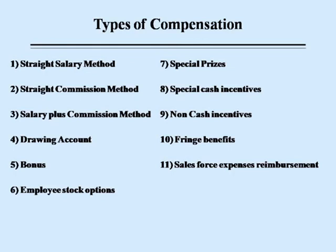Fringe benefits are benefits given to sales personnel in the form of medical reimbursement, pension schemes, group insurance, and other benefits. The last type of compensation is sales force expenses, which includes reimbursement of expenses incurred by sales personnel as part of their selling activity, such as travel, lodging, petrol allowances, and daily allowances. The company reimburses all those expenses in exchange for bills provided by the sales personnel.